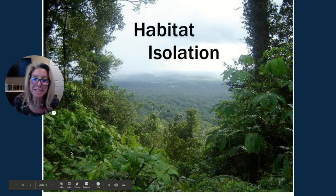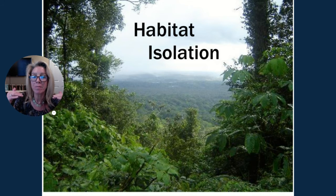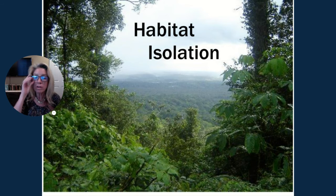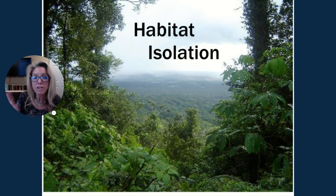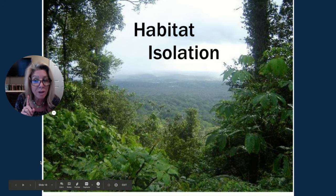With habitat isolation, you might live in a similar habitat but you're isolated because one organism lives at the top of the canopy, one at the bottom, or one is on the trunk and one is in the grass below. You're living near each other and could potentially interbreed, but living in different areas of that habitat keeps you separate — even within the same geographical range.